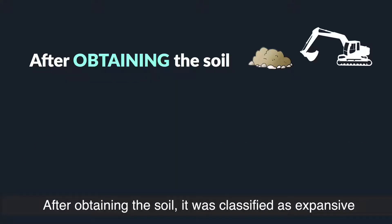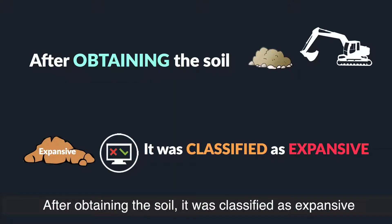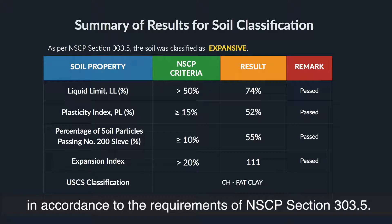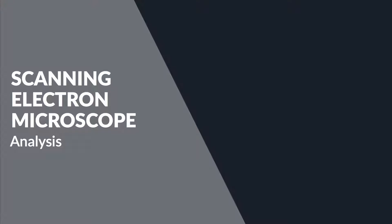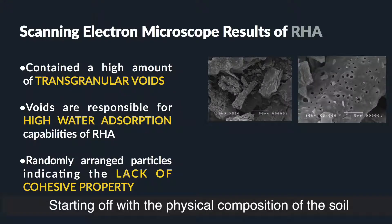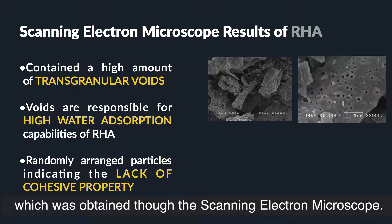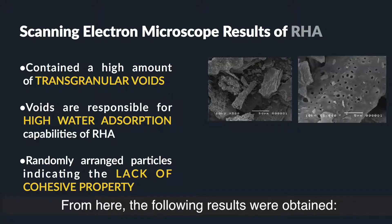After obtaining the soil, it was classified as expansive in accordance with the requirements of NSCP Section 303.5. The presented table summarizes the results of the classification tests. Starting with the physical composition of the soil, which was obtained through the scanning electron microscope, the following results were obtained.